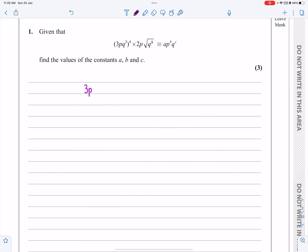So if we copy out the question, it says we've got (3pq²)⁴ multiplied by 2p√(q⁸), and they're telling me that that's identical to ap^b q^c.